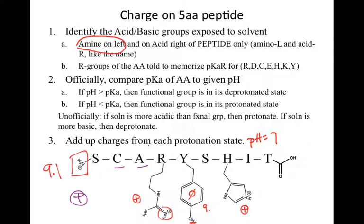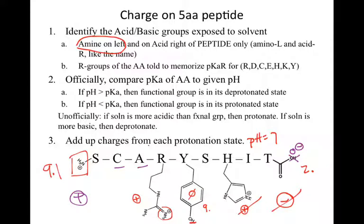And the last one is our carboxylic acid, which has a pKa of about 2. Our pH is more basic than our functional group, so it needs to be in the deprotonated state — O minus — giving that group a negative charge. So now we check: positive cancels minus, then positive, positive, zero. The overall charge on this peptide is plus two.